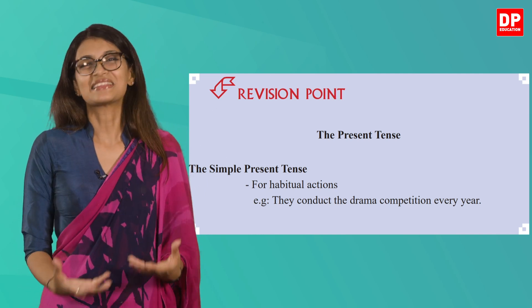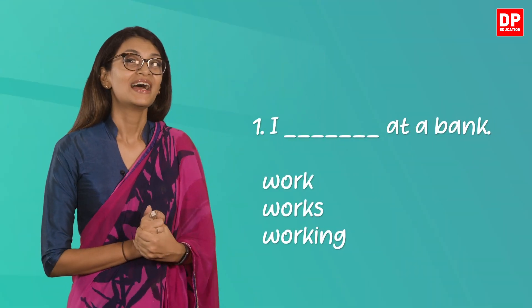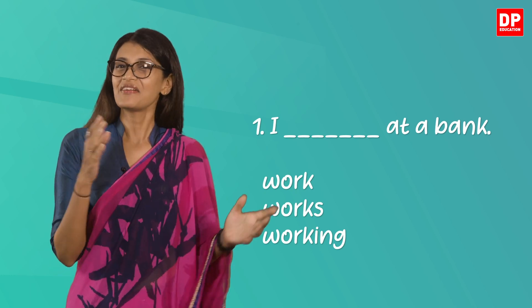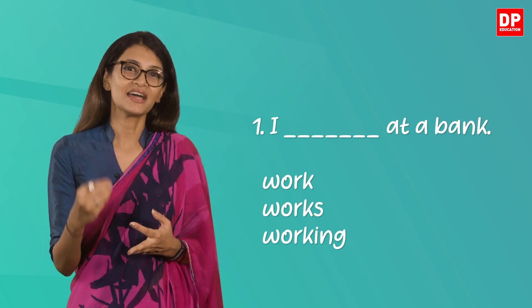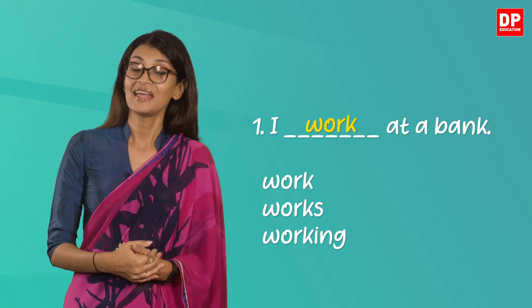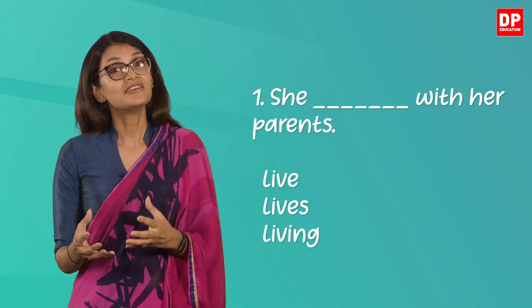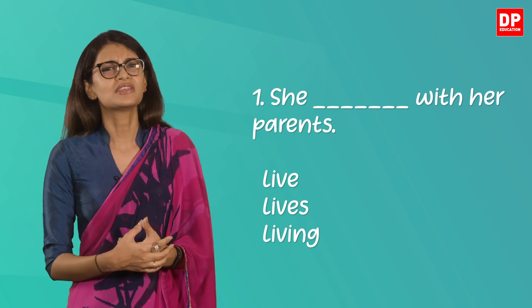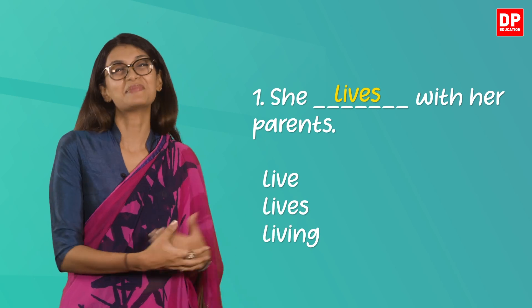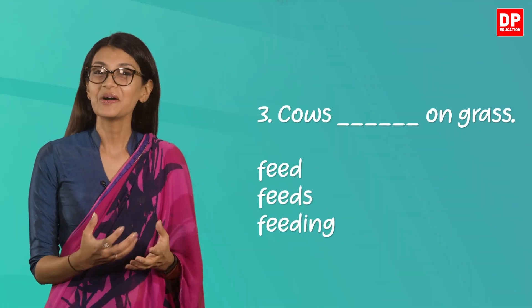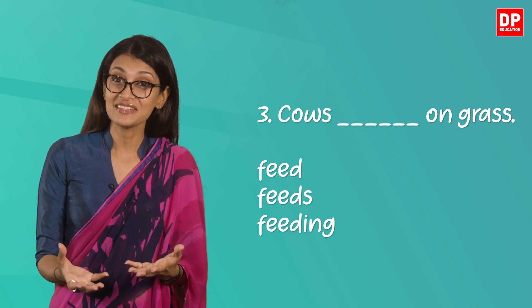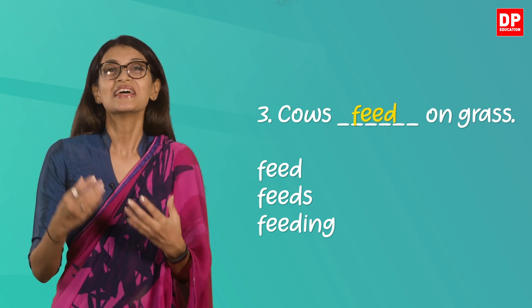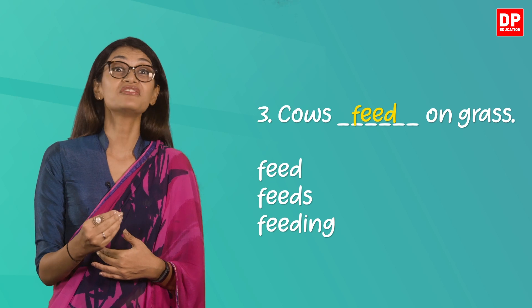Question one: 'I blank at the bank.' The options are work, works, and working. Since it is 'I,' the correct answer is 'work.' Question two: 'She live/lives/living with her parents.' The correct answer is 'lives.' Question three: 'Cows blank on grass.' The options are feed, feeds, or feeding. The answer is 'feed' — 'cows' is third person plural, so there is no need for an additional S.